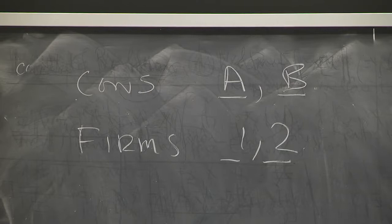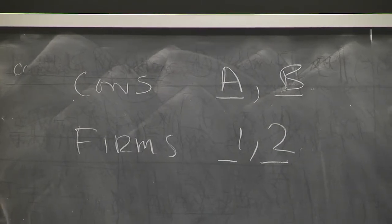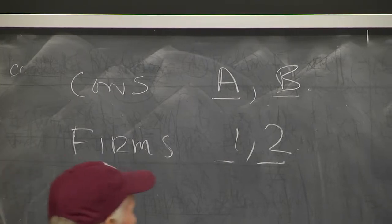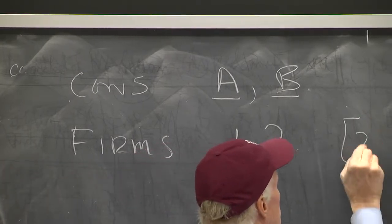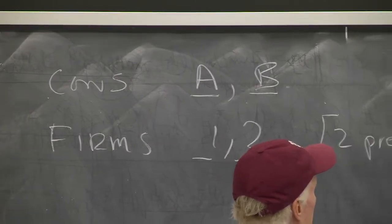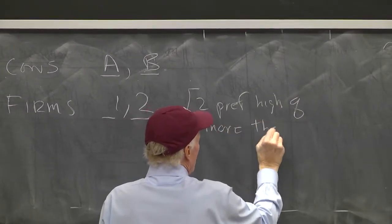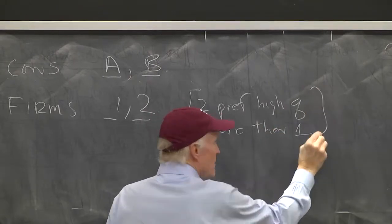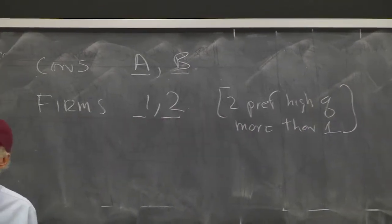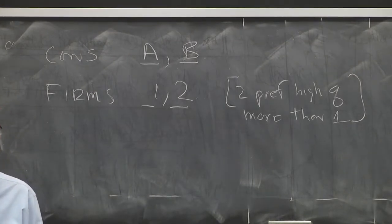Now, I'm going to make some assumptions that are kind of innocuous because I just want to define 1 and 2 and A and B. So, B prefers high quality more than A. Basically, in my picture, that means B's indifference curves are always steeper than A's, right? They always got steeper indifference curves.